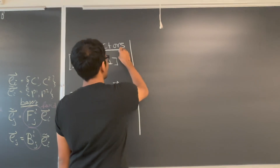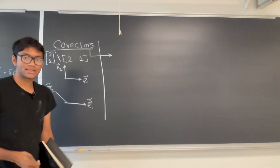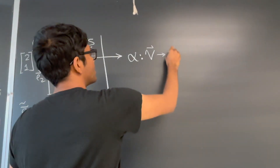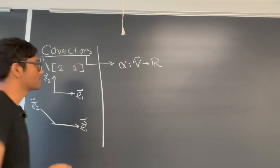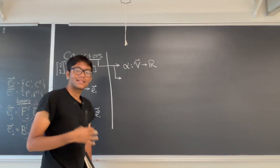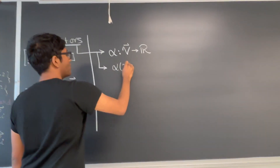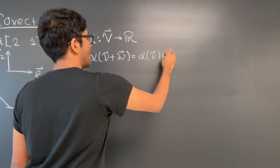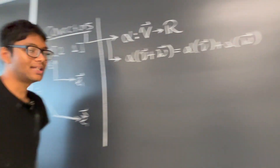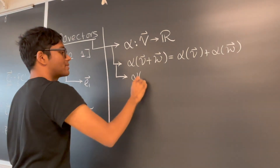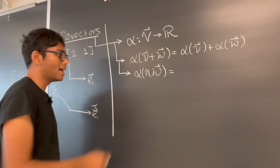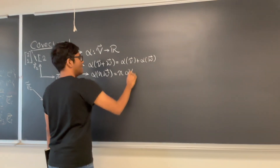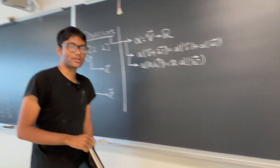Covectors have three main properties. Their first property is that they're a function alpha which takes vectors B to real numbers. The second property is the linearity property: if I apply a covector function to two vectors, it's the same as applying the distributive property — I can apply that covector to each vector individually. And finally, the last property of covectors is scalar multiplication: if I apply a covector function to a scalar times a vector, that's the same thing as taking that scalar outside and just applying the covector function to the vector.